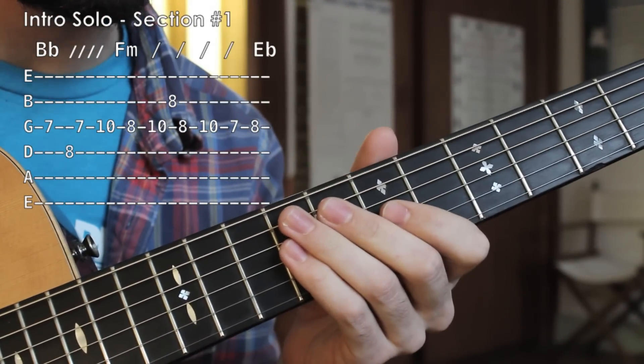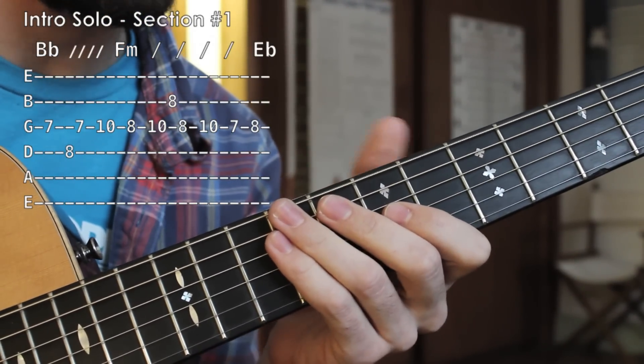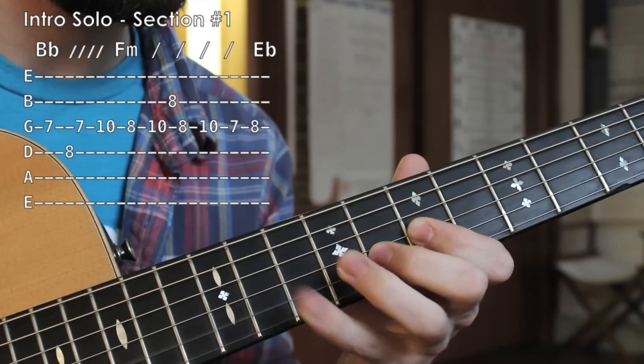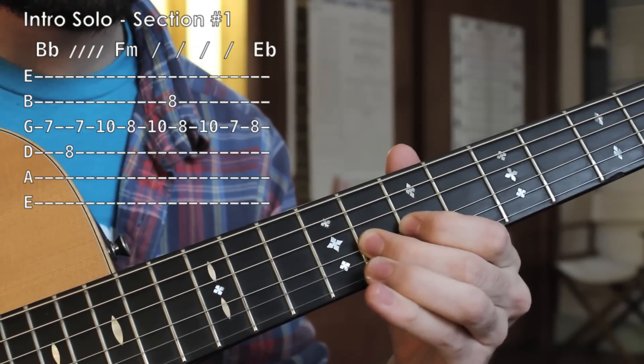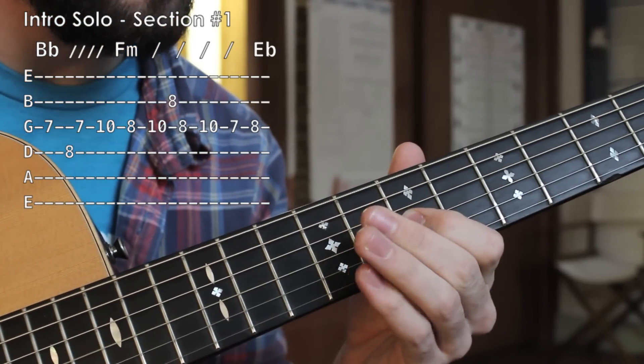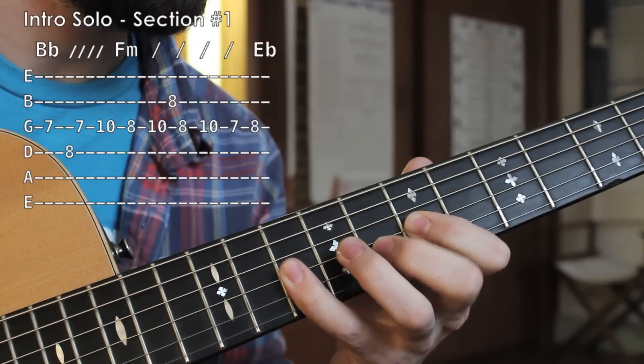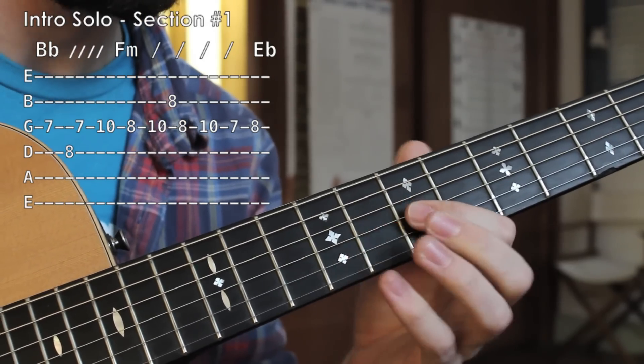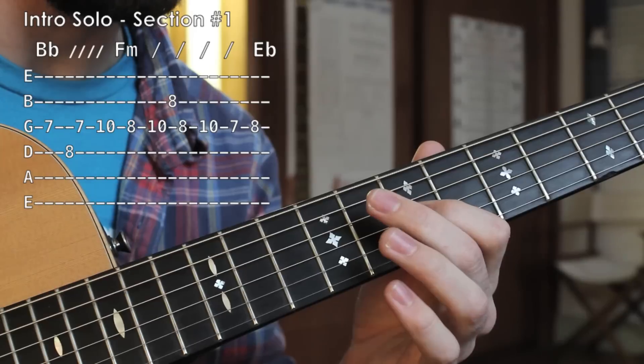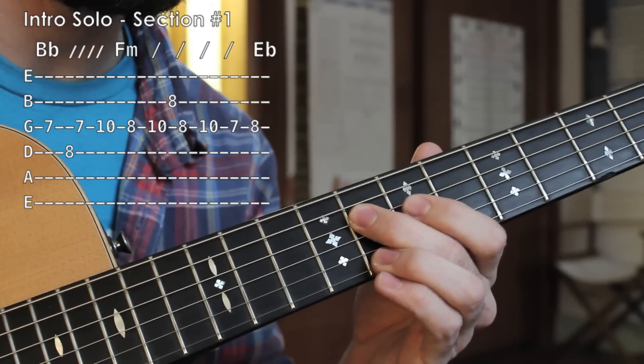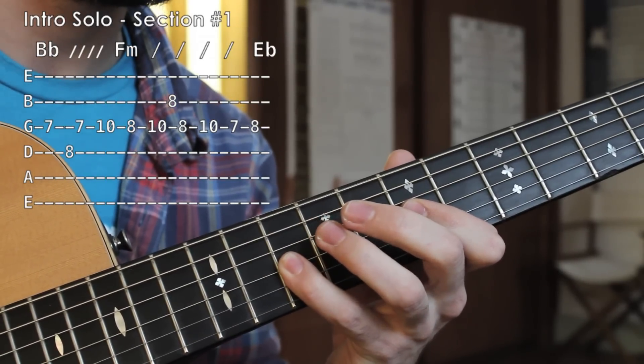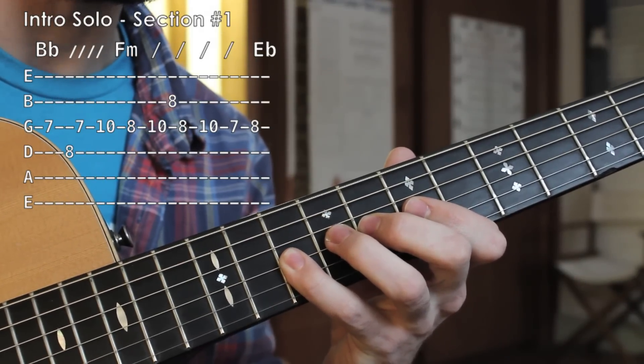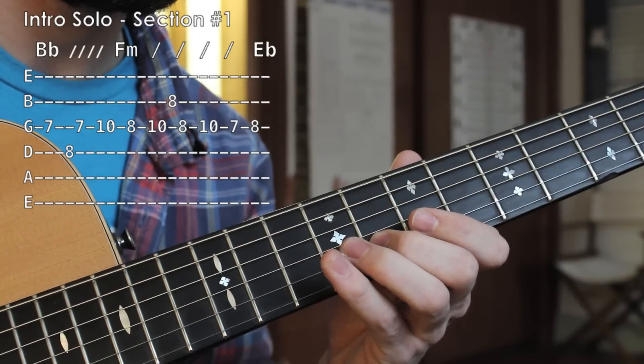Okay, so now that we have our chord progression down, we can take a look at our flamenco style intro. I'm going to demonstrate the first part. Let me do it a little slower. All right, so that was seventh on the G string, up to the eighth on the D, back to seven, up to tenth fret on the G string, to the eighth fret of the G string, tenth fret on the G string, then to the B string, eighth fret.